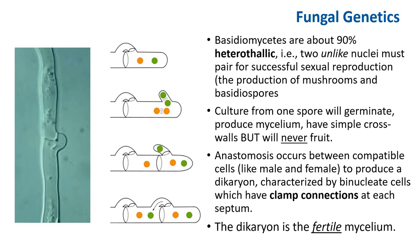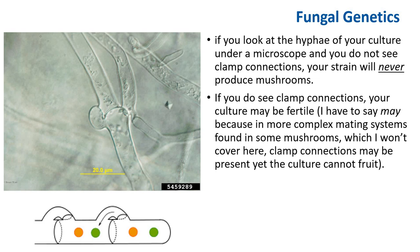The dikaryon is characterized by binucleate cells — two nuclei — with clamp connections at each septum. The dikaryon is a fertile mycelium. Here you see the clamp connection at the septum and a microscope picture of it. Here is an important point: if you look at the hyphae of your culture under a microscope and you do not see a clamp connection, your strain may never produce mushrooms. If you do see a clamp connection, your culture may be fertile. In some complex mating systems, clamp connections may be present yet the culture cannot fruit.